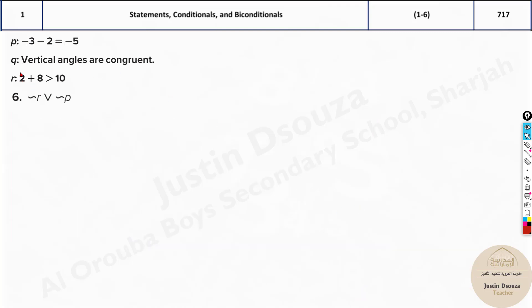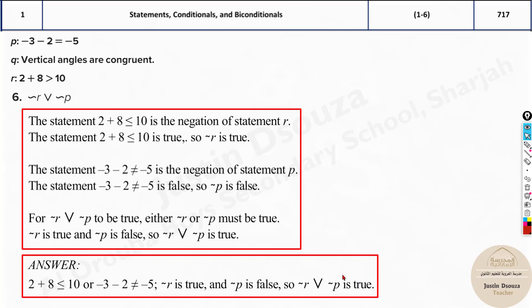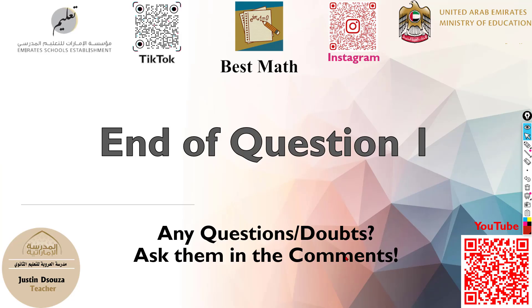So just look into this statement. Over here negation of R means it's true or false. Because negation of P is false. Now this is true again. So that is how easily we can solve the first one.